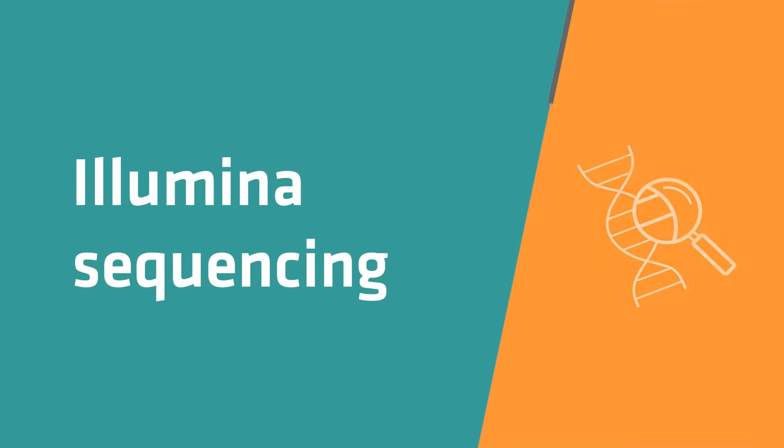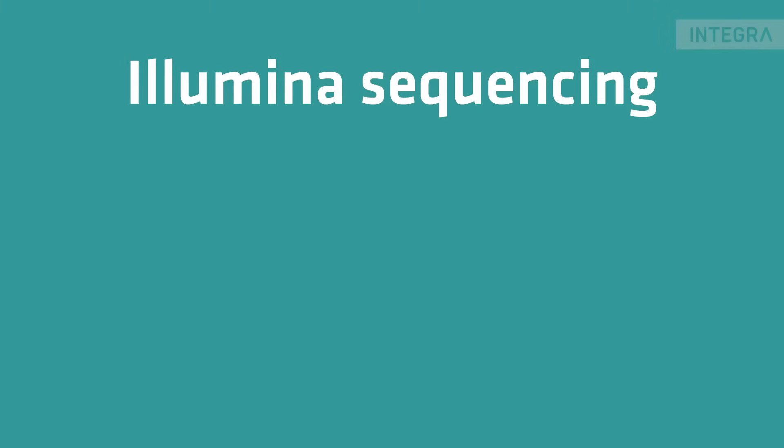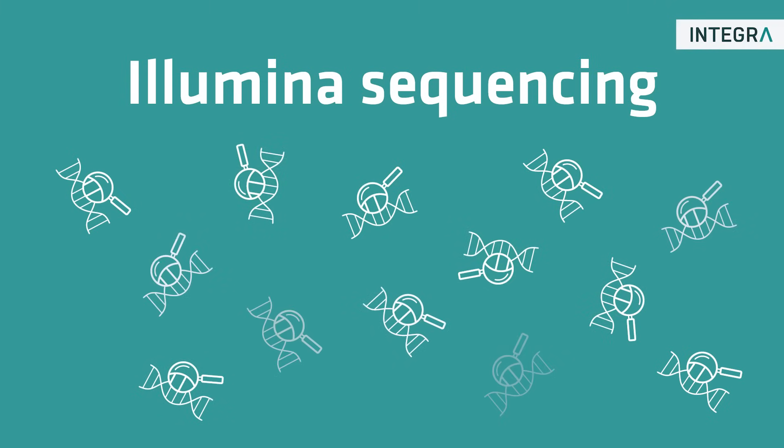In this video, we're going to explain how Illumina sequencing works. Illumina sequencing is a next-generation sequencing method used to sequence millions of DNA fragments in parallel.